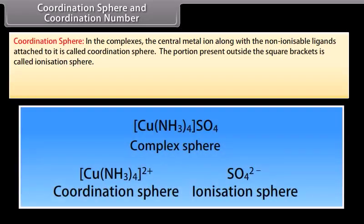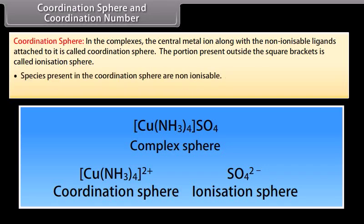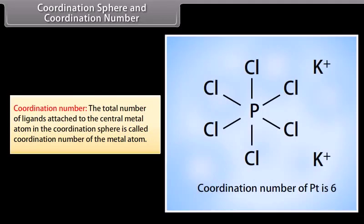Coordination Sphere and Coordination Number. In complexes, the central metal ion along with the non-ionizable ligands attached to it is called the coordination sphere. The portion present outside the square brackets is called the ionization sphere. Species present in the coordination sphere are non-ionizable. The total number of ligands attached to the central metal atom in the coordination sphere is called the coordination number of the metal atom.